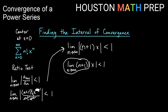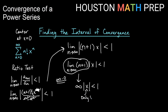Pulling n plus 1 out of the absolute value brackets (since it's positive), we have the limit of (n plus 1) times the absolute value of x, less than 1. As n gets larger, n plus 1 blows up to infinity. So we have infinity times the absolute value of x less than 1. The only way this works is if the absolute value of x is 0 — the indeterminate form of infinity times 0. So the series converges only at its center, x equals 0, and there are no endpoints to check.